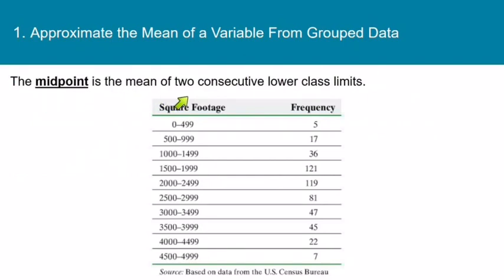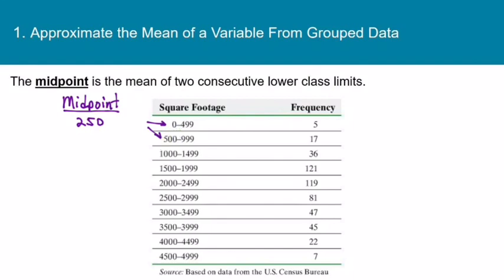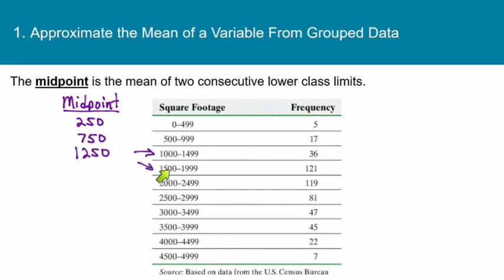The midpoint simply refers to the mean of two consecutive lower class limits. For example, on this first class, the lower class limit is 0 and the next lower class limit is 500. So we would average 0 and 500 to get 250 — the midpoint of this first class, right in the center. For the second class, the mean of 500 and 1,000 is 750. And the mean of 1,000 and 1,500 is 1,250, which is the midpoint of the third class.